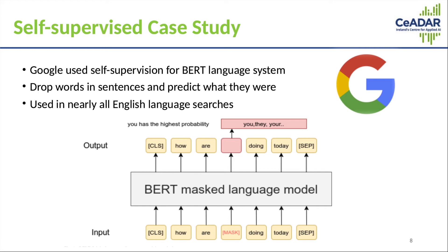So in this case you have 'how are blank doing today?' and the goal of the model was to predict what this missing word could be. As you can see in this example here, some options have been given: 'you', 'they', and 'your' — these have been predicted by BERT. What this allowed BERT to do is automatically learn things about the structure of the English language, which can then be taken advantage of for downstream tasks such as classifying searches.